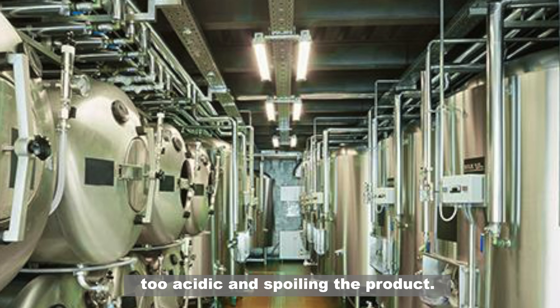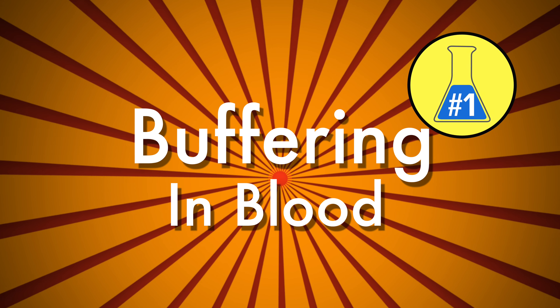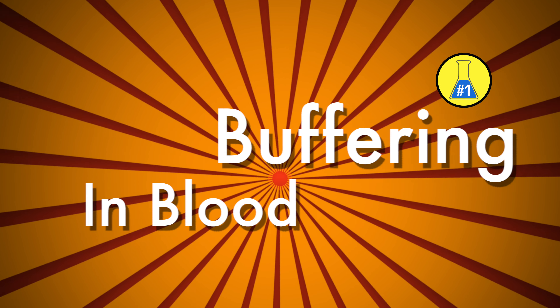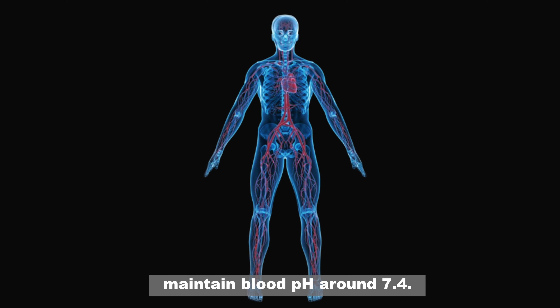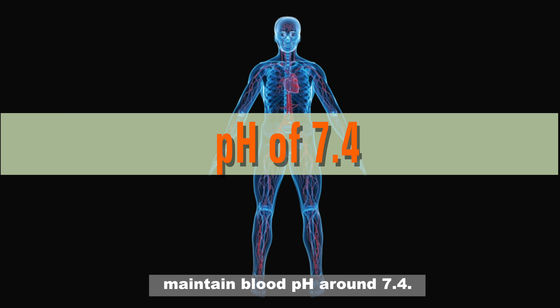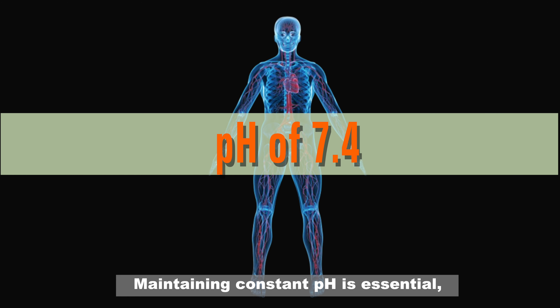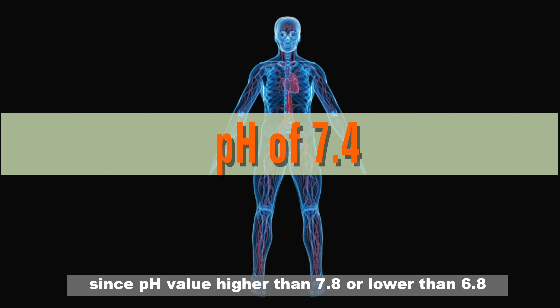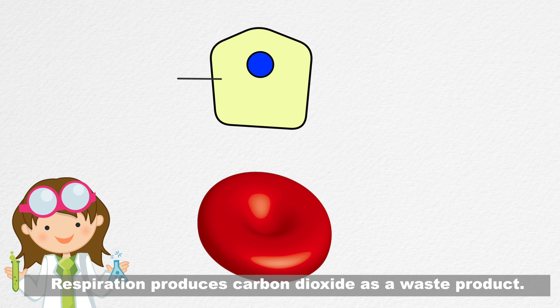Number four: In shampoos. Buffers are used in shampoos to maintain pH slightly acidic. Shampoo contains soap which is basic and this can be damaging to your hair or even burn your scalp. To counteract and to make the shampoo slightly acidic, a buffer is added. Citric acid and sodium hydroxide are two example buffers used in making shampoo.